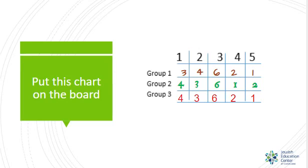Ask a representative from each group to write on the board how many words they have for each syllable count. For instance, group one might say they have three word cards with one syllable, four with two syllables, six with three syllables, and so on. When you look at this, not everyone will be the same — so have your students go back, renegotiate their numbers, and put their new set of numbers on the board. Hopefully everyone arrives at the same response; if not, work through where their challenges are.